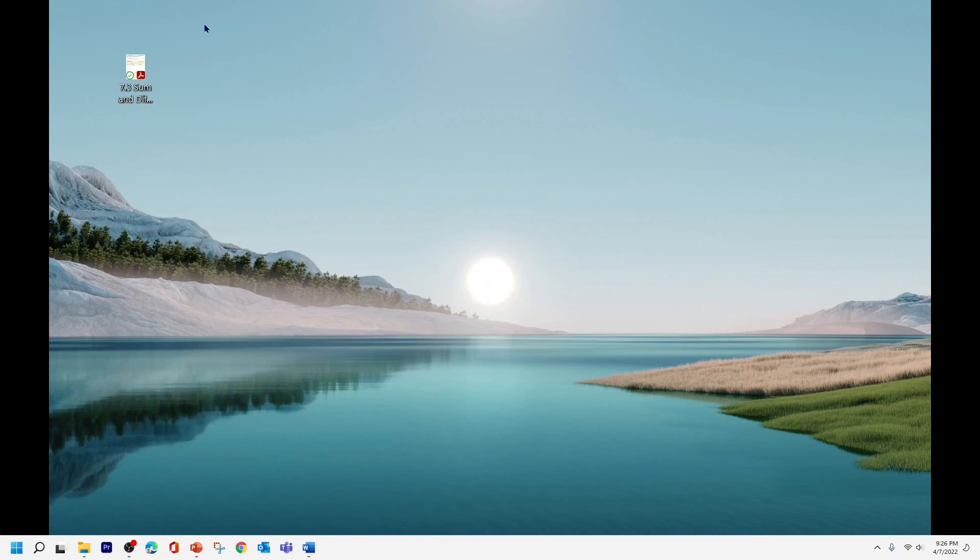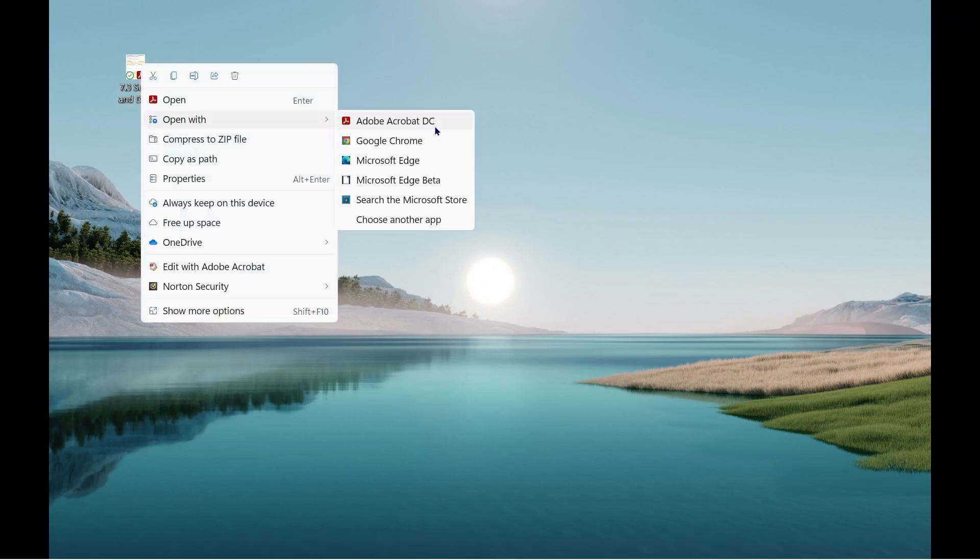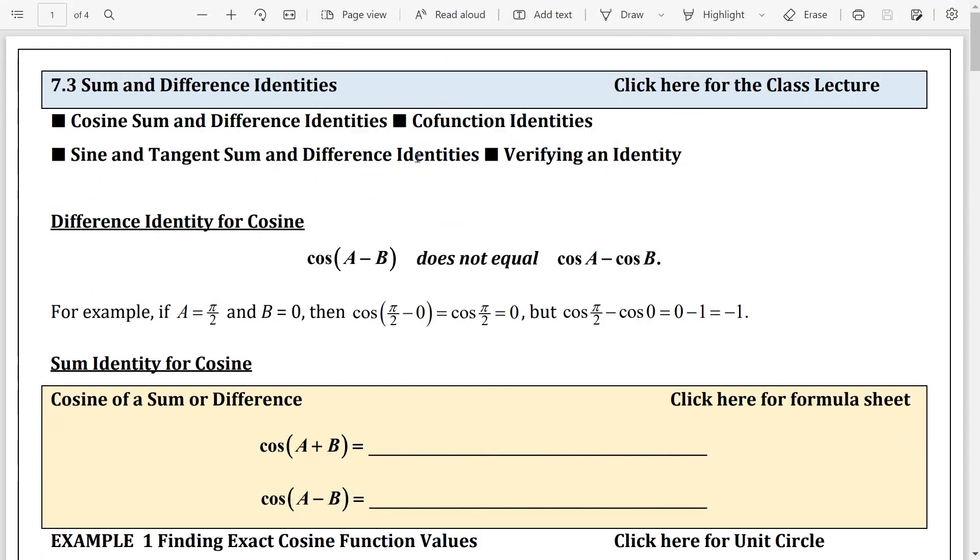Once you click enable, Edge browser is going to ask you to restart it. Go ahead and click restart, and you're all ready to go. So I'm going to go ahead and close this one. So here is my PDF document. I will right-click, open this in Edge browser. Because I'm in Edge browser, I would love to take advantage of its full screen by pressing F11. And now I am free of all distractions.